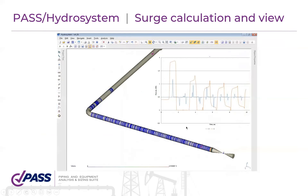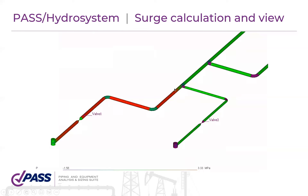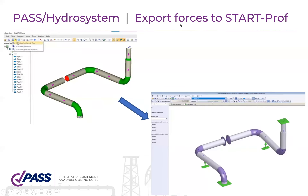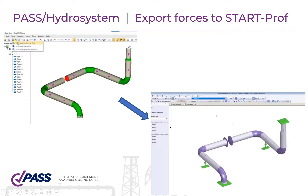Hydra System has very strong surge analysis and calculation capabilities. It can not only calculate pressure waves but also visualize all these phenomena directly on your piping diagram — showing how waves travel and how they impact your equipment. Additionally, Hydra System can calculate the forces acting on elbows, bends, valves, and other piping components during surge events, and export these forces to PASS StartPro for piping stress analysis.